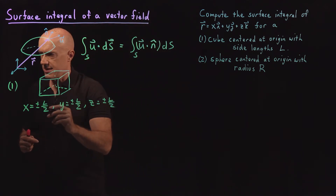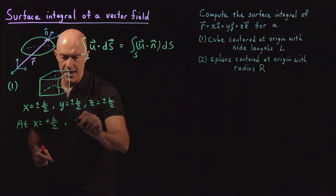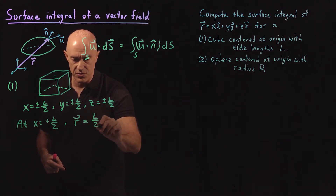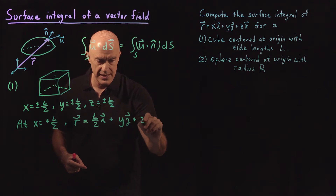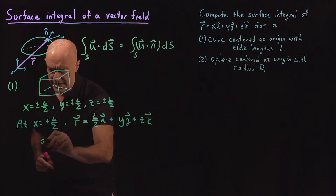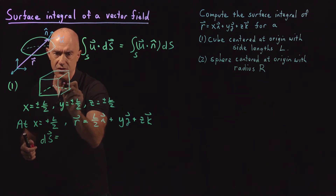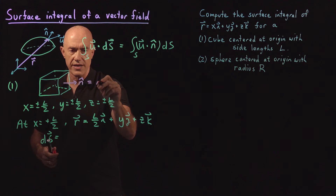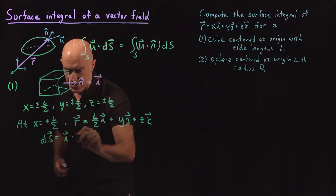The side I want to do is the face at x equals plus L over 2. At that side, our position vector — which is the vector field we're integrating — has x fixed at L over 2, so it's (L/2)i plus yj plus zk, where y and z vary on that face. The normal vector to that face points in the x direction, so it's just the unit vector i, and therefore ds equals i ds.